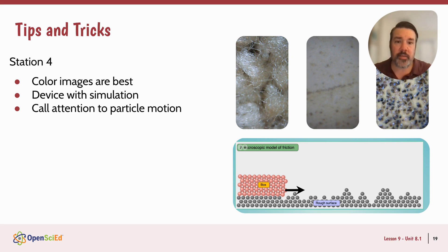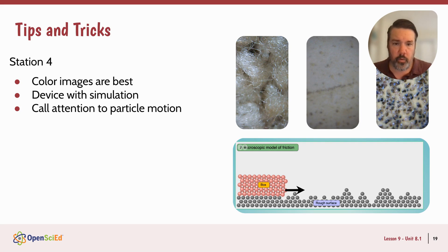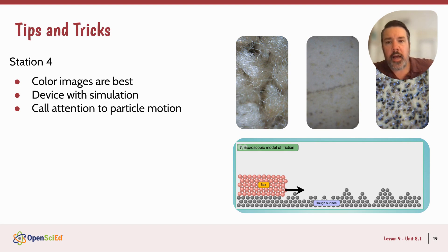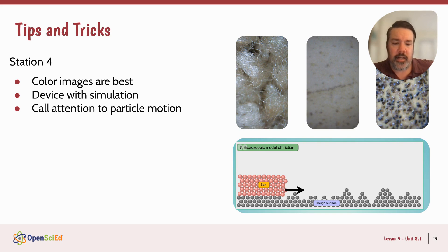For station four, if possible, you really want the color images — there's carpet, tile, and sandpaper zoomed in. You can laminate them and use them year after year. This station also has a device for the simulation, so you may put two devices here so kids can scroll through color images without printing them. While kids explore the simulation, your job is to call attention to particle motion — they'll see everything wiggling. Call back to what that means: if your kids haven't had much understanding of thermal energy, you might need to do some unpacking about what it means for particles to speed up and how that relates to temperature.